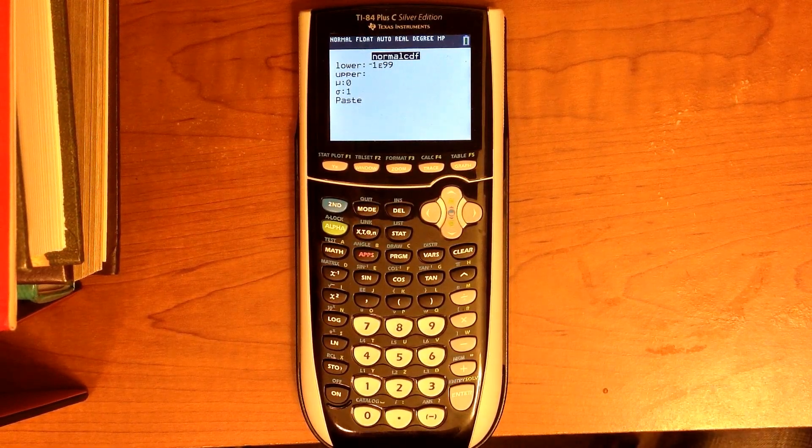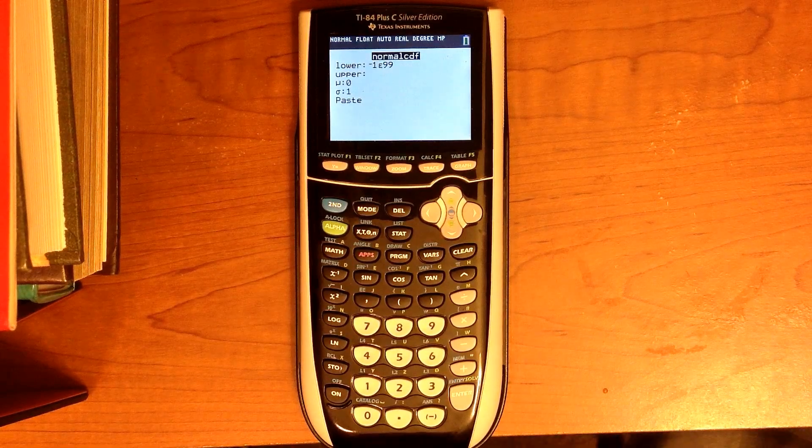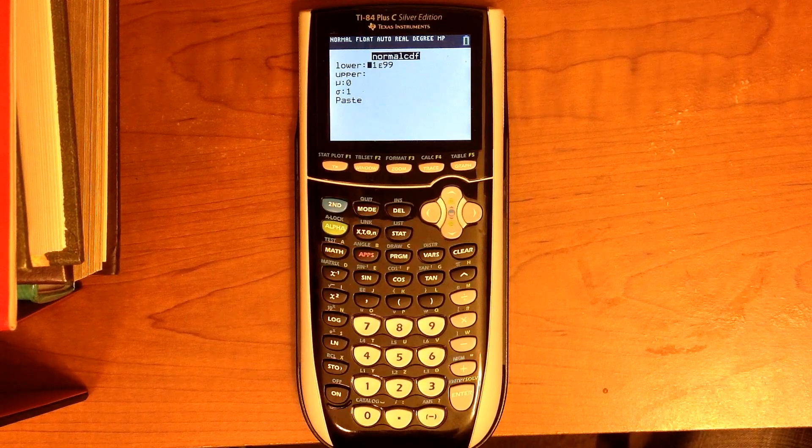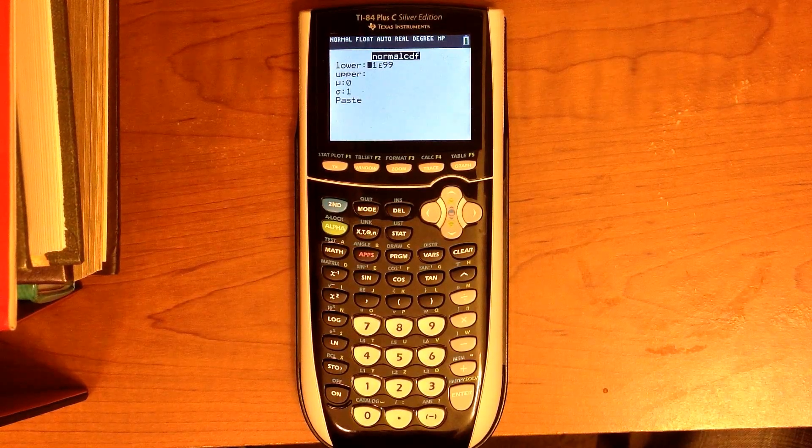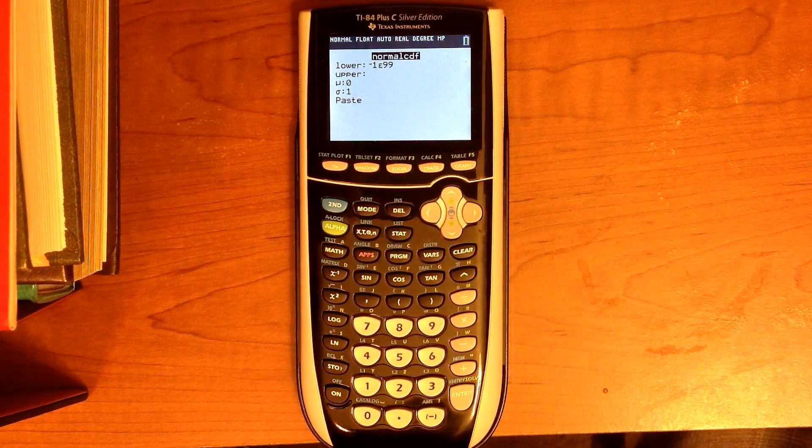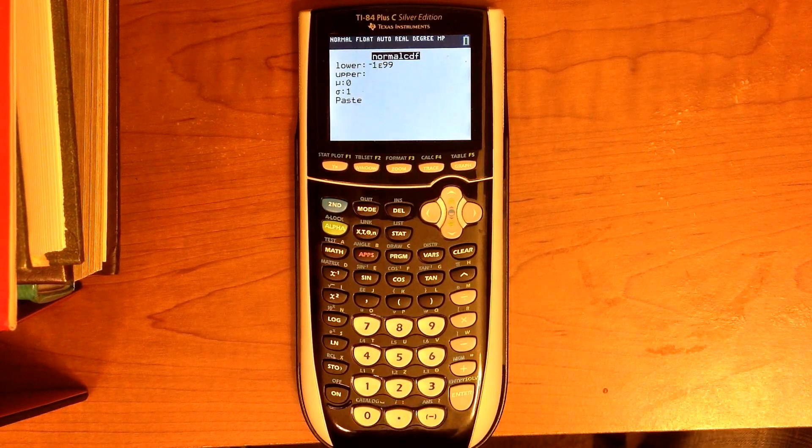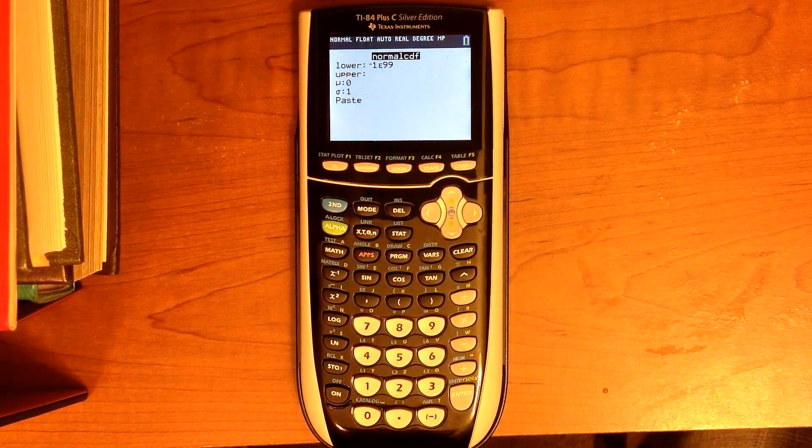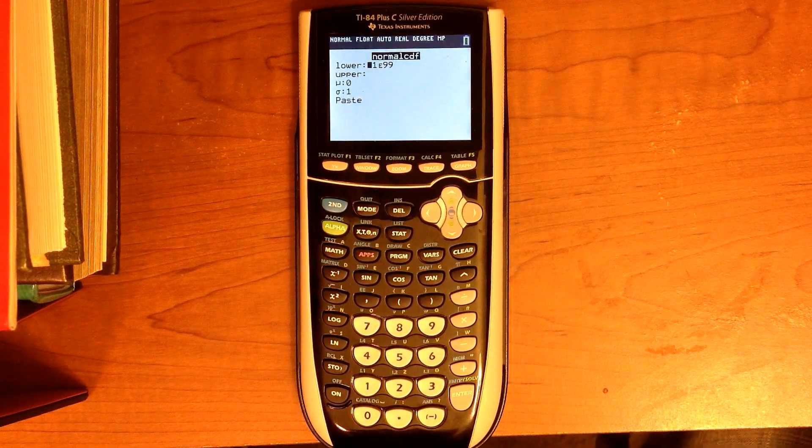Now we're going to do some of these exercises on the notes to show you how it works. Let's start with number 12. We want to find the proportion of values that are less than 1.36 standard deviations above the mean. That means we want to know what proportion of values are less than a Z-score of 1.36.